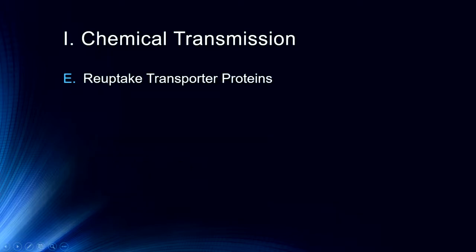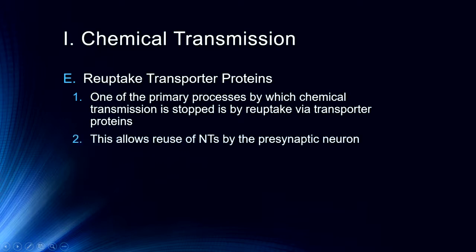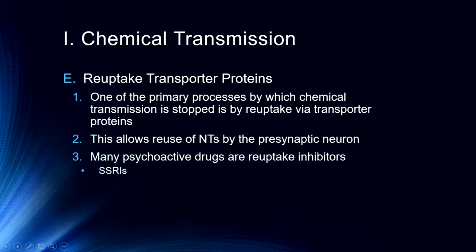The other process occurring is the reuptake of neurotransmitters into the presynaptic neuron, accomplished by reuptake transporter proteins. This is one of the primary processes by which chemical transmission is stopped — taking those neurotransmitters back in via these transporter proteins. This is an active process, and importantly, those neurotransmitters can then be repackaged in vesicles and re-released — basically recycling. Many psychoactive drugs are reuptake inhibitors; cocaine is a reuptake inhibitor.